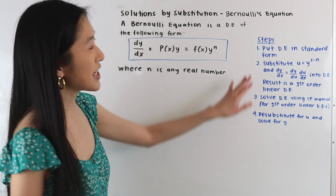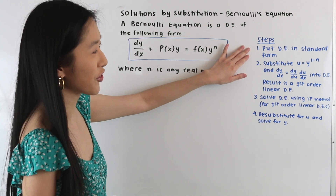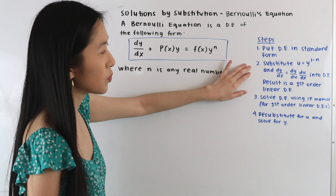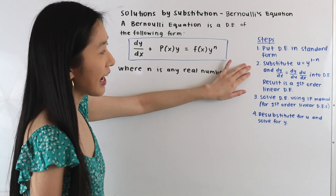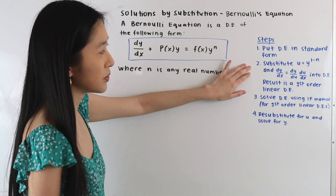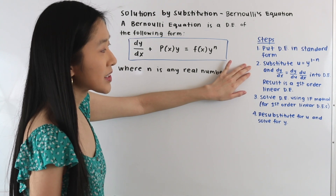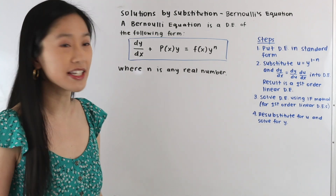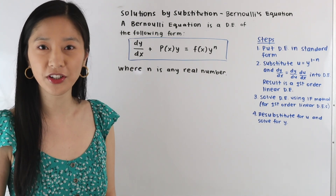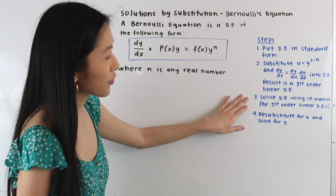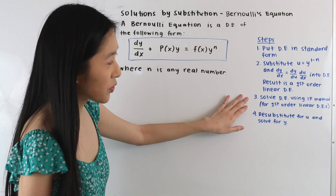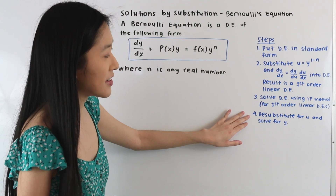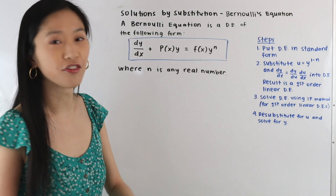The first thing we need to do is put our differential equation in standard form. Next, we make the substitution u = y^(1−n) and dy/dx = (dy/du)(du/dx). The resulting differential equation is a first order linear differential equation. Then we solve it using the method of the integrating factor. The last step is to resubstitute for u and solve for y.